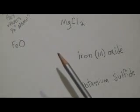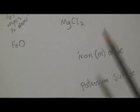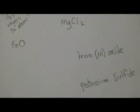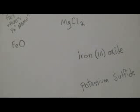So I have four different examples: FeO, MgCl2, iron(III) oxide, and potassium sulfide. These are four different compounds and they're all ionic. Metal and a non-metal, metal and a non-metal, and so on and so forth.